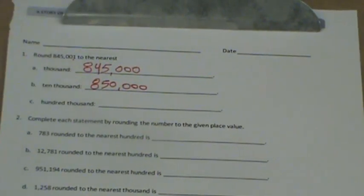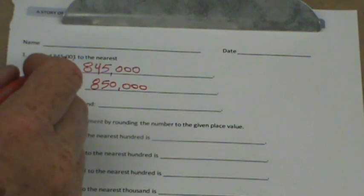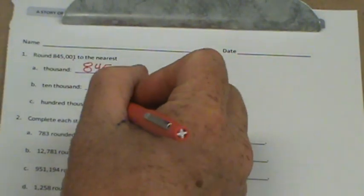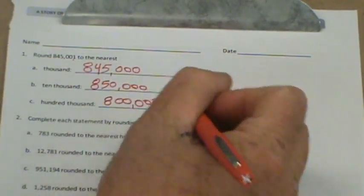Let's continue on with hundred thousand. We have 8 and we have a 4 behind it. 45,000. That's not 50,000. It would have to be greater than 50,000 to make the 8 go up to a 9. So it is just 800,000.